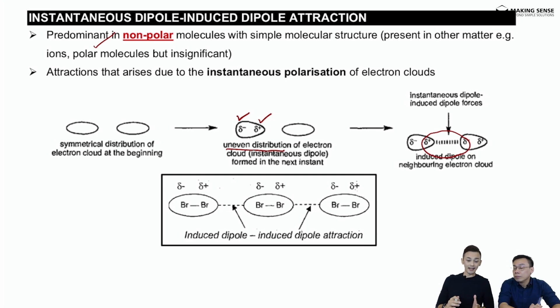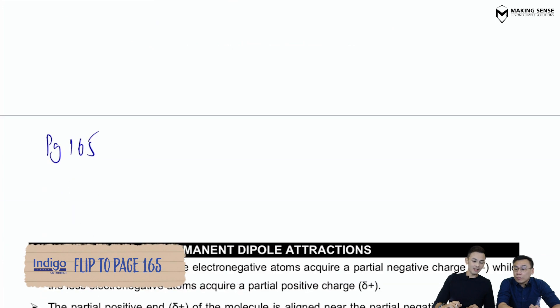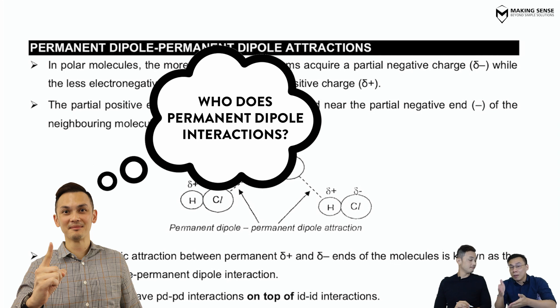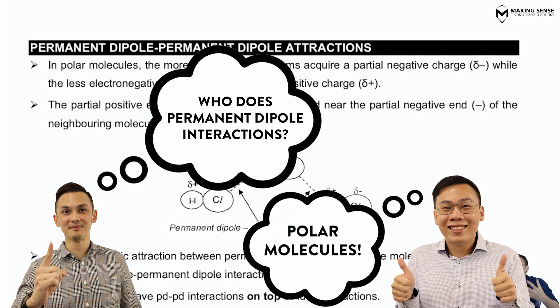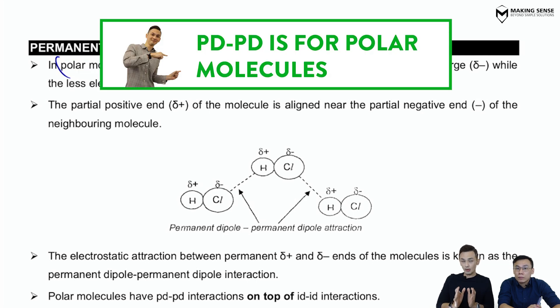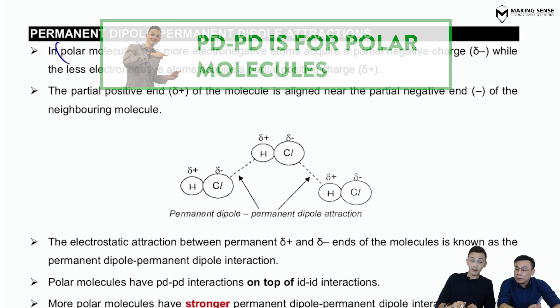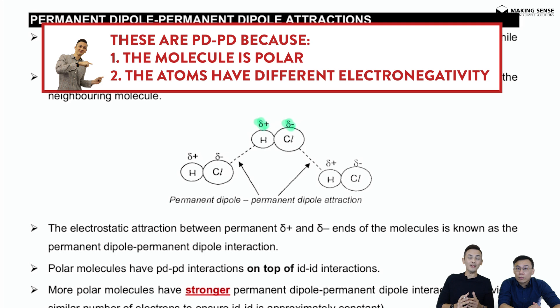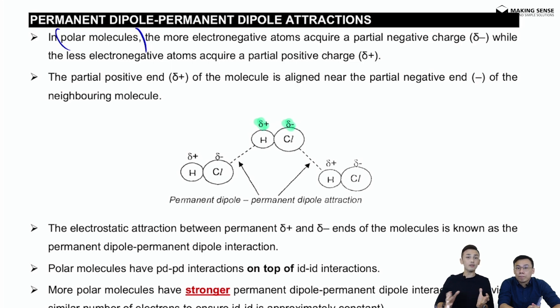Now, if we compare ID-ID against PD-PD, the main difference is: who does PD-PD interactions? If you see the name, it's a permanent dipole, so the dipole is always there. It must be for polar molecules. In the event you have molecules that are polar in nature, the predominant interaction is permanent dipole. If you take a look at your notes, we went through an example previously on HCl. If you focus on H versus Cl, the delta plus and delta minus are permanently there because chlorine is always more electronegative.